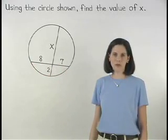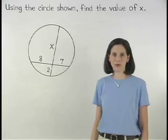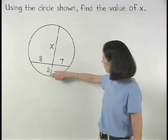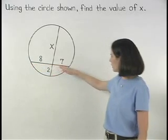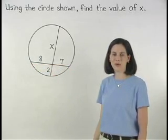Remember that if two chords intersect inside a circle, then the product of the lengths of the segments of one chord is equal to the product of the lengths of the segments of the other chord.